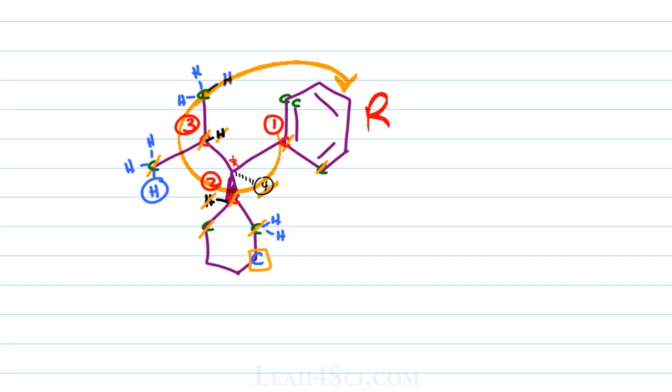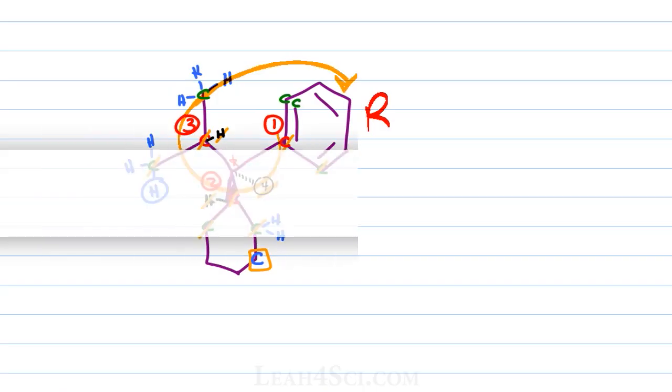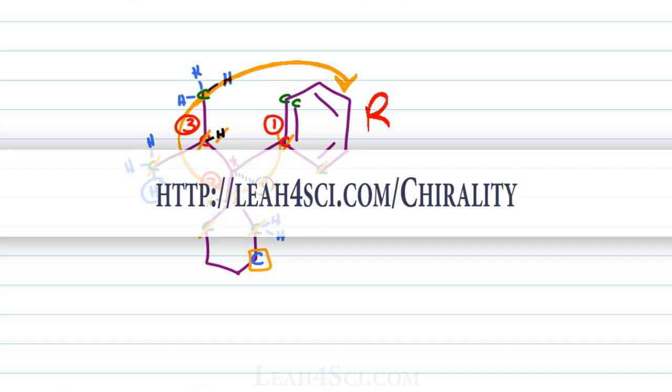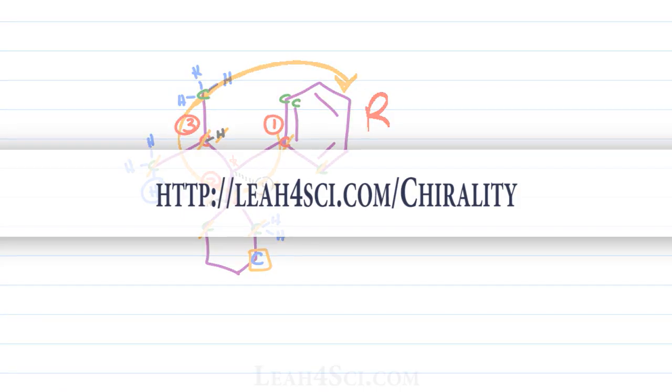For even more practice finding R and S on simple and tricky molecules make sure you try the stereochemistry quiz posted on my website leah4sci.com/chirality. For even more chirality be sure to watch the upcoming videos where I show you how to find R and S for Fischer projections, Newman projections, cyclohexane and chair conformations and then show you how to compare molecules to determine if they're the same or if they're enantiomers using a combination of logic, this swap method and probably never redrawing the molecule. You can find all this with my practice quiz and cheat sheet on my website at leah4sci.com/chirality.